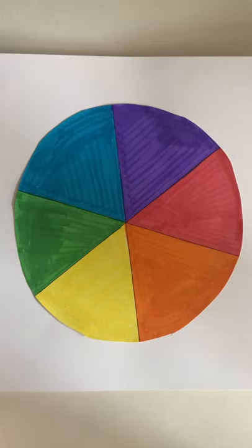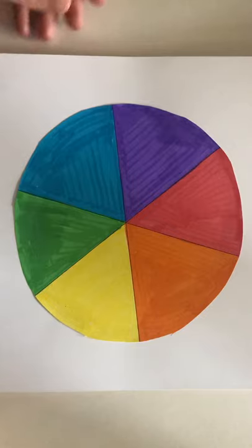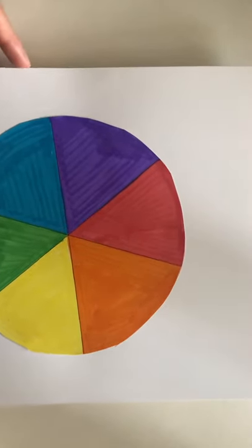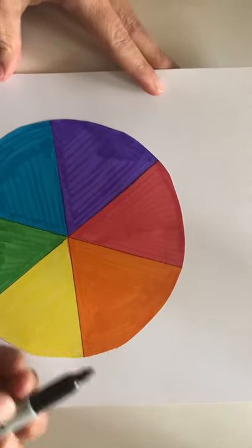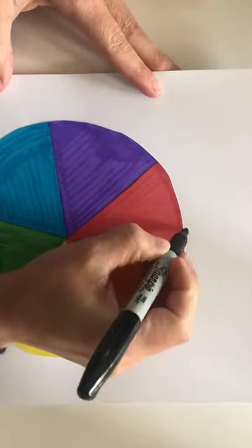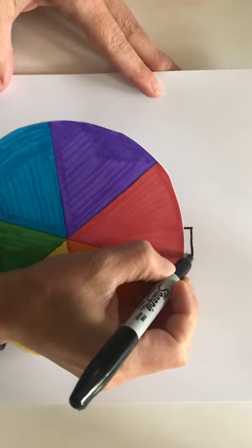And when you're doing that, you want to think about the shapes that you need to create that. So I think I'm going to turn my color wheel into a robot. So to start I'm gonna add some small rectangles